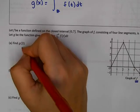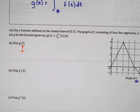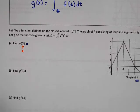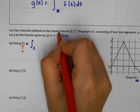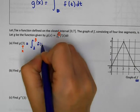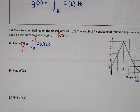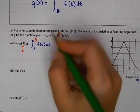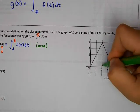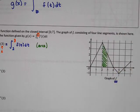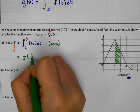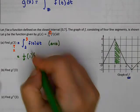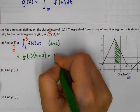To find g of 3, plug in x equals 3: g of 3 is the integral from 2 to 3 of f of t dt. An integral means we're finding area, so g of 3 is the area from 2 to 3, which is shaped like a trapezoid. That's one half times the height of 1 times base 1 of 4 plus base 2 of 2, giving an answer of 3.